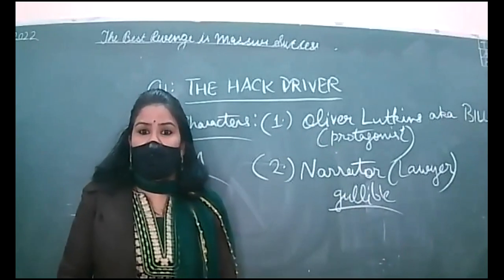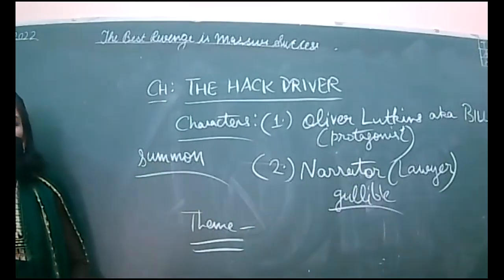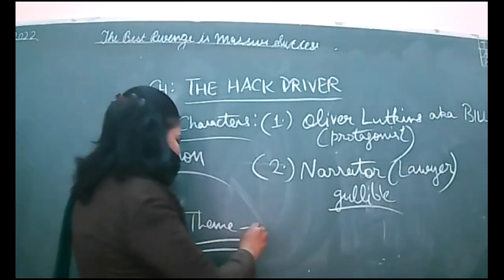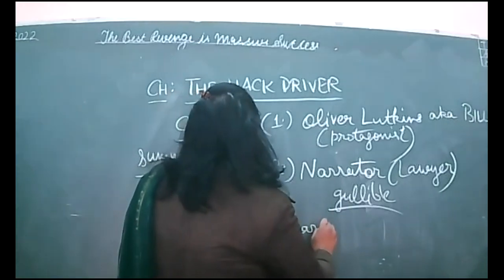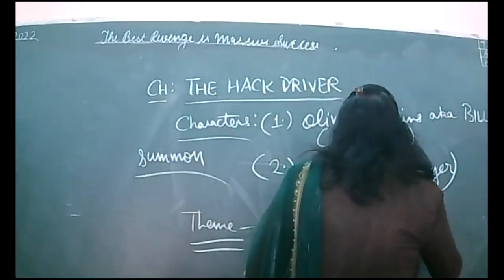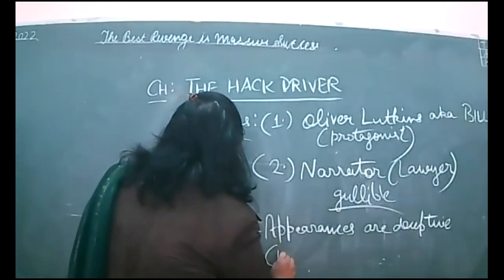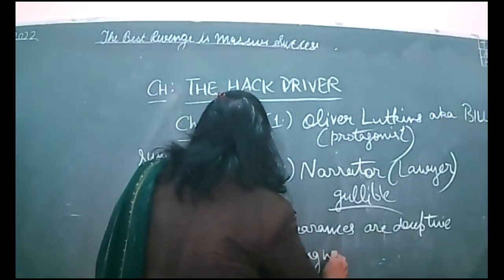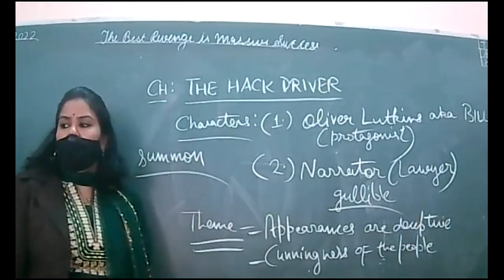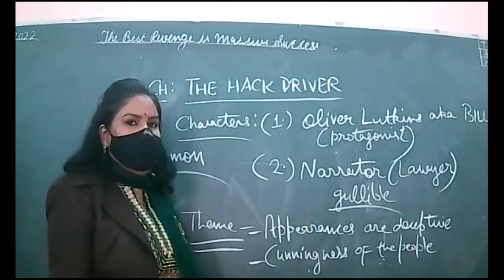So what is the theme of this chapter? As in the chapter 'Douglas,' we have the same concept here: appearances are deceptive. What people look like, they are actually not the same. So the first theme is that appearances are deceptive. The second theme is the cunningness of people — their cleverness — and how they fool innocent people. That is what we can see in this chapter.